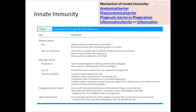Summarizing the mechanisms of innate immunity: it is contributed by anatomical barriers, physiochemical barriers, phagocytic barriers or phagocytosis, and inflammatory barriers or inflammation. Among the anatomical barriers, the most important is the skin, which acts as a mechanical barrier retarding microbial entry. The skin also has a pH of about 3 to 5 which retards the growth of microorganisms.